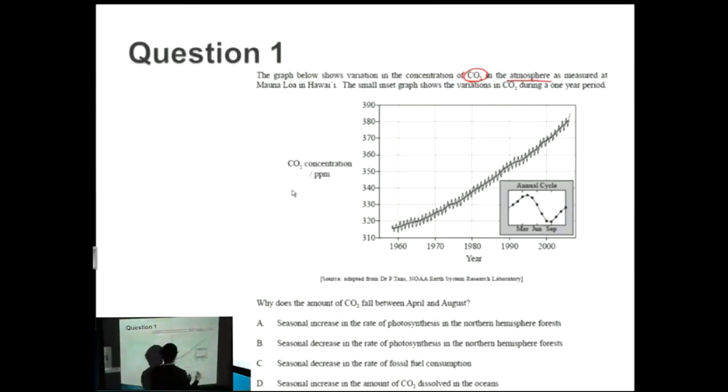The IB, you get to know them quite well, they love Moana Loa. I can't pronounce it, but it's a very popular mountain that they talk about. The small insect graph shows the variations in CO2 during a one-year period. The insect graph is this one here that I've just highlighted.